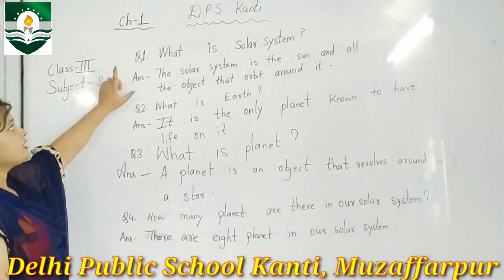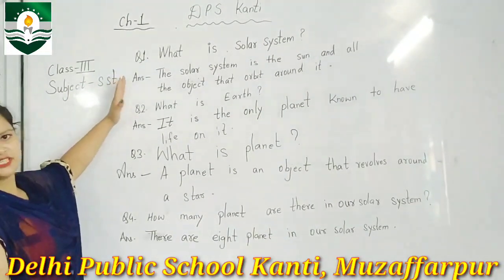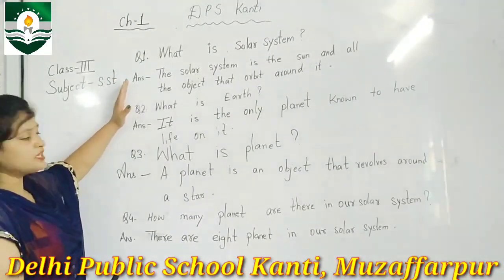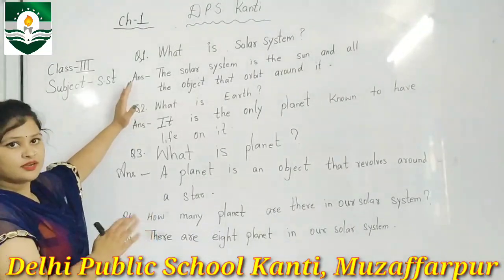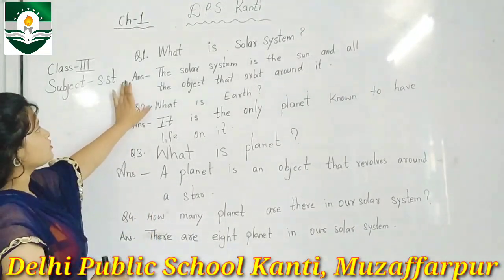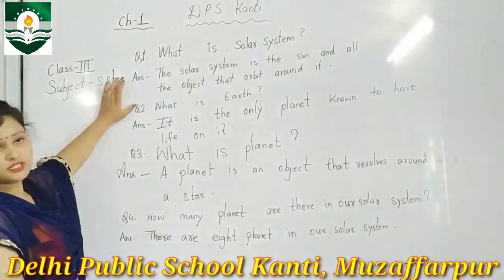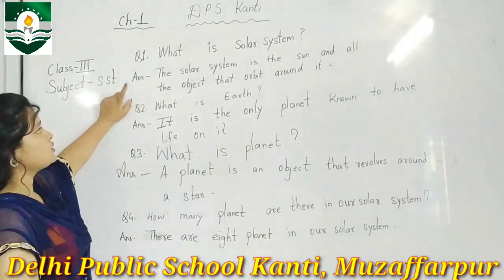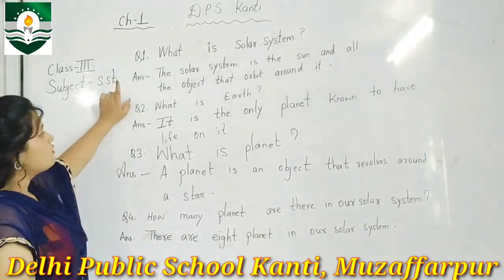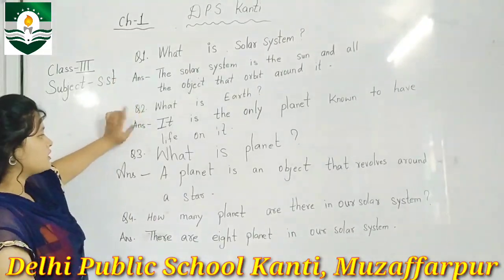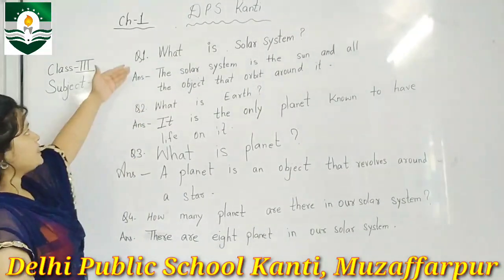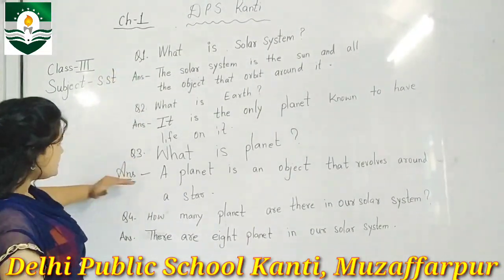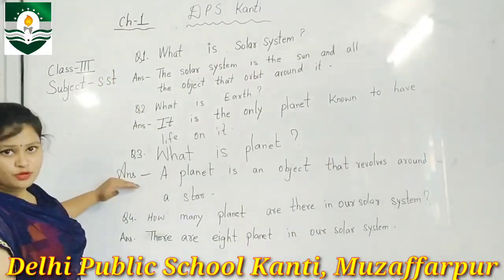Chapter 1. This is the page number of your book. This is part 1. The questions are: what is the solar system, what is Earth, what is planet. So, these are just 3 questions in our book.